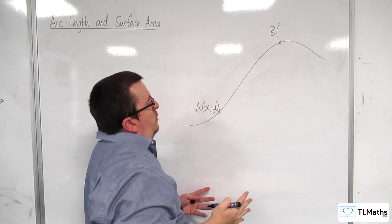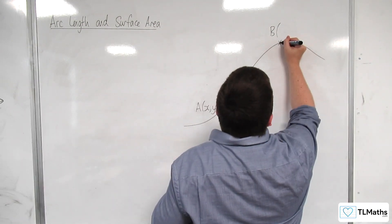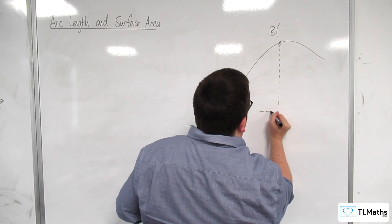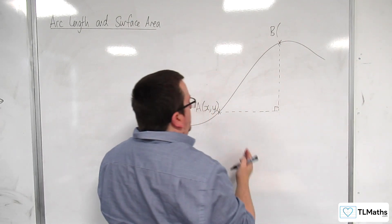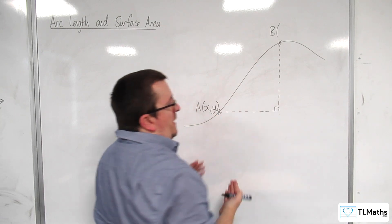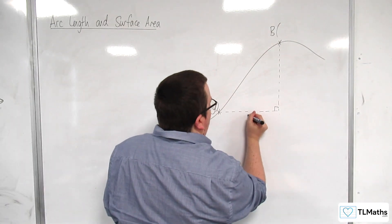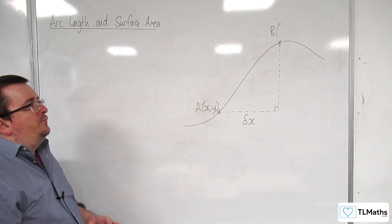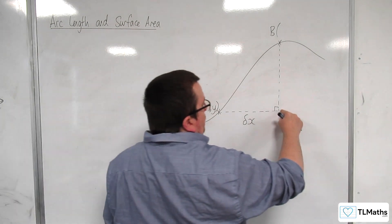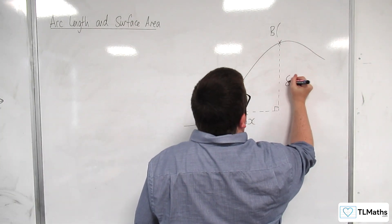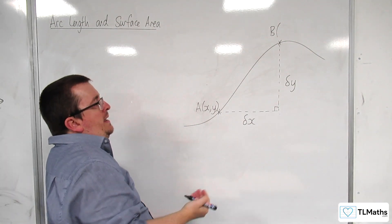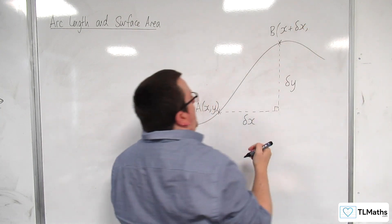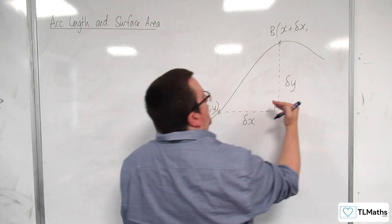Now what are the coordinates of point B? Well I'm going to draw a vertical line here and a horizontal line here to make a right angle and I'm going to say that this is a little bit of x. I'm going to use the notation delta x. So delta here representing a little bit of x. And consequently this vertical distance will be a little bit of y, so that the coordinates of B are x plus delta x and the y coordinate will be y plus delta y.